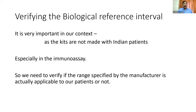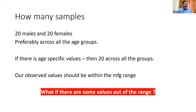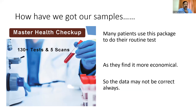Biological reference interval measurement is very important, especially for immunoassays, because the kits we use are imported and standardized for a different population — we need to verify them for ours. Use 20 males and 20 females, with age-specific values if relevant. Many labs resort to using master health checkup samples as their 'normals,' but we should question how sure we are that those patients are actually normal — they could be diseased individuals using the checkup for economy. When you get outliers, replacing them to suit your requirement is a question of integrity.